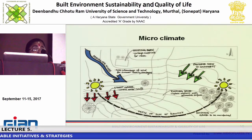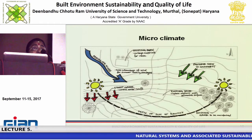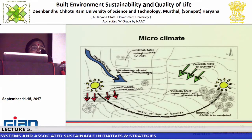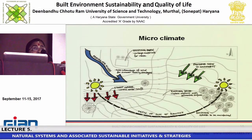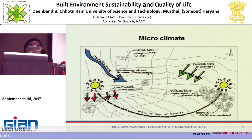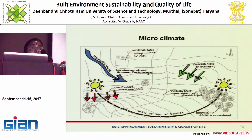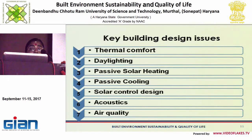The microclimate of a place may be governed by topography, site features, water bodies, and vegetation, which can modify the microclimate. Microclimate data may not be obtainable throughout the year due to time limitations, so we judge based on seasonal variations and site features. Key design issues we look at based on the natural system information include thermal comfort, daylighting, passive solar heating, passive cooling, solar control design, acoustics, and air quality.